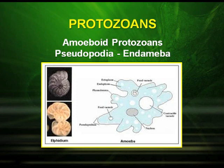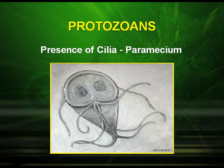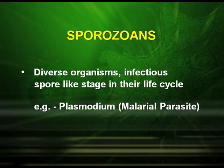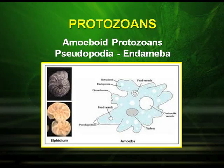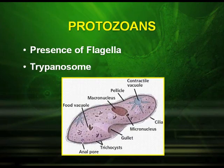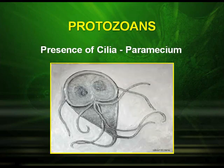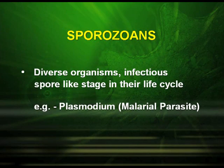Protozoa may be amoeboid protozoa, flagellated protozoa, ciliated protozoa, and sporozoans. The amoeboid protozoa have pseudopodia with the help of which they carry out their locomotion. Flagellated protozoa have flagella — example, Trypanosoma. Ciliated protozoa have cilia — example, Paramecium. The sporozoans are diverse organisms that have an infectious spore-like stage in their life cycle — example, Plasmodium, which brings about the disease malaria.